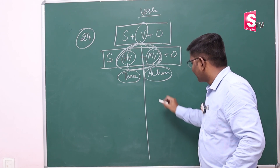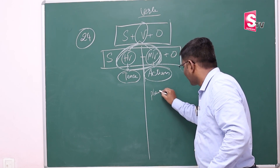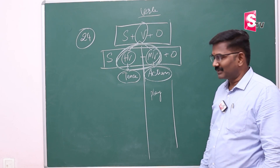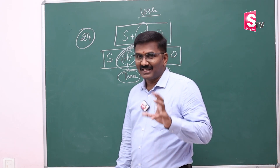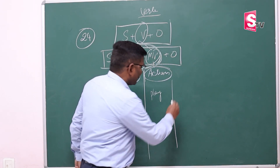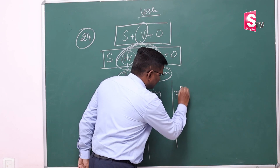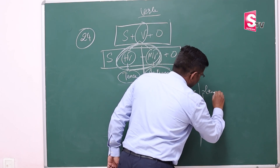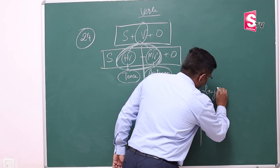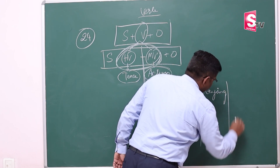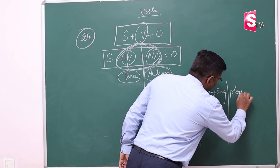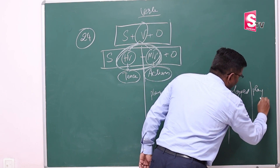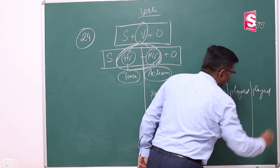We are going to learn about the main verb — it's about action. Every action word has five forms. I repeat: every action word has five forms. For example, 'play' is a verb. Its five forms are: play, plays, playing, played, and played.